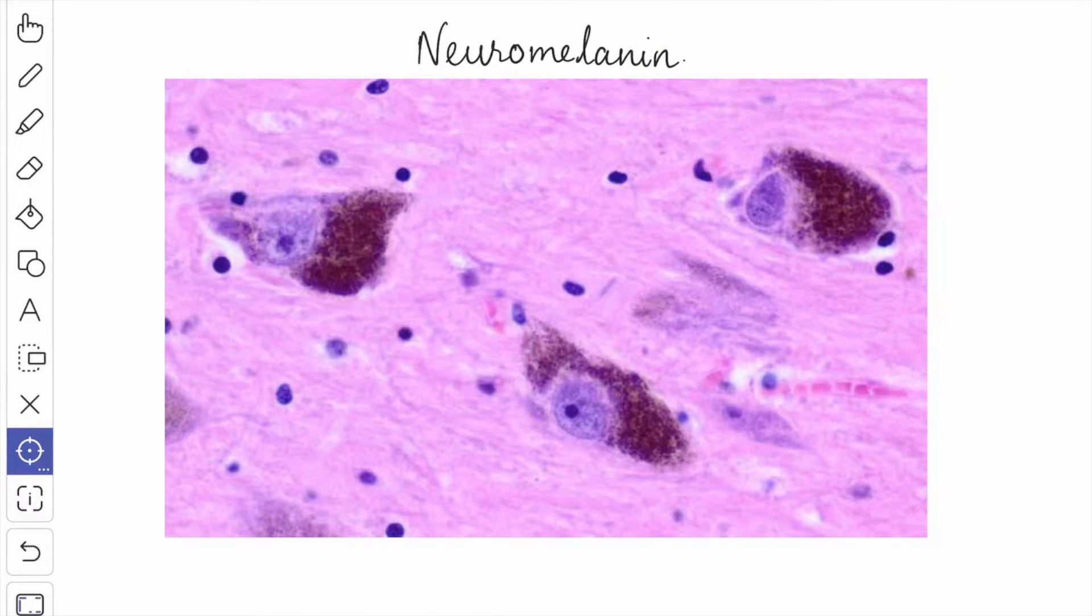We will see about the neuromelanin. The neuromelanin or the degradation products of catecholamine synthesis are more abundant in the cell bodies of the substantia nigra of midbrain. The neuromelanin helps synthesis of dopamine which acts as a neurotransmitter substance.